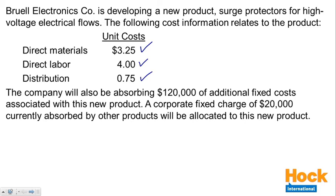The company will also be absorbing $120,000 of additional fixed costs associated with this new product. A corporate fixed charge of $20,000 currently absorbed by other products will be allocated to this new product.